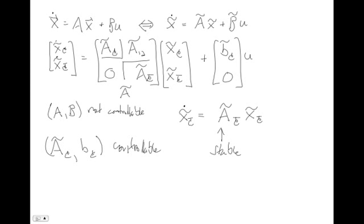So if I ask the question, is this system controllable, you say no. And then if I say, is it stabilizable, you say yes, if this not-controllable matrix is already stable. What that means is, even if the eigenvalues of the upper controllable part of A were unstable, we could make them stable through closed-loop feedback. And so that's why we call it stabilizable.